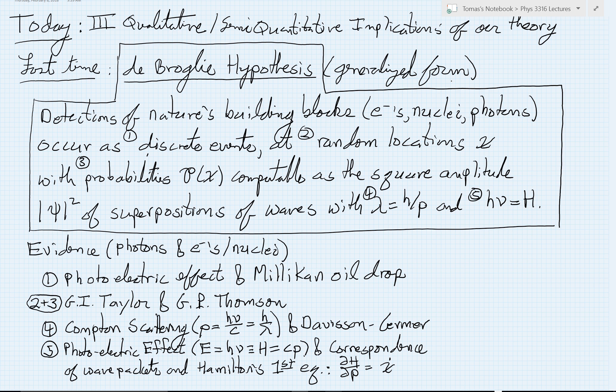So the basic hypothesis, you will recall, has five key elements. And the hypothesis is that detections of nature's building blocks, electrons, nuclei, or even photons. And it's very important to realize there's something remarkable going on here because all of these building blocks, even our interaction, all obey these key properties.